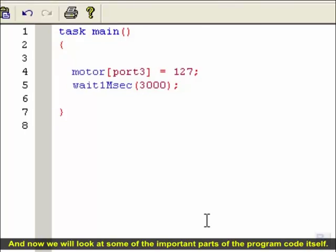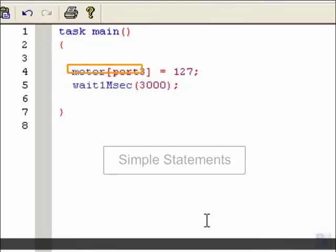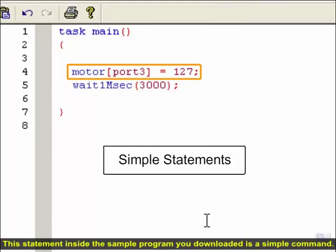And now, we will look at some of the important parts of the program code itself. The most basic kind of statement in Robot C simply gives a command to the robot. This statement inside the sample program you downloaded is a simple command. It instructs the motor plugged into port 3 to turn on at full power.